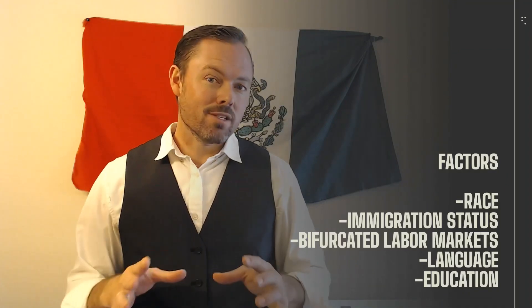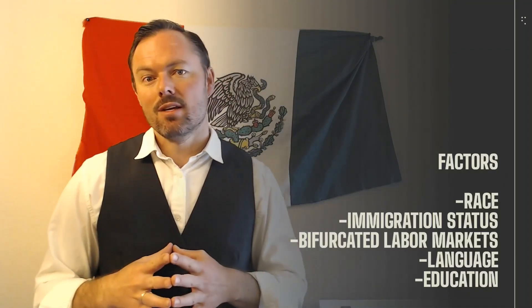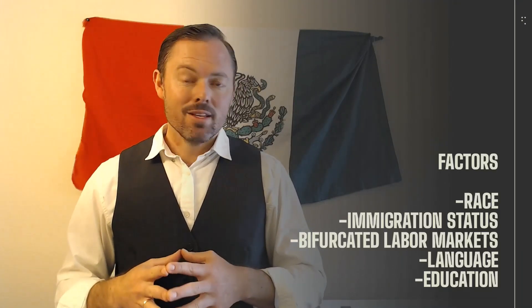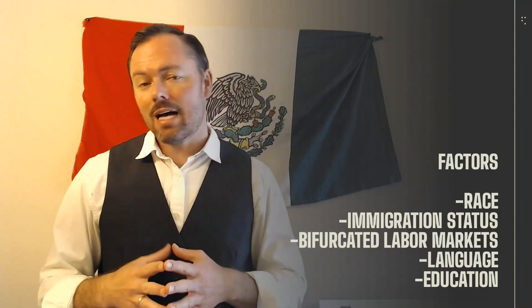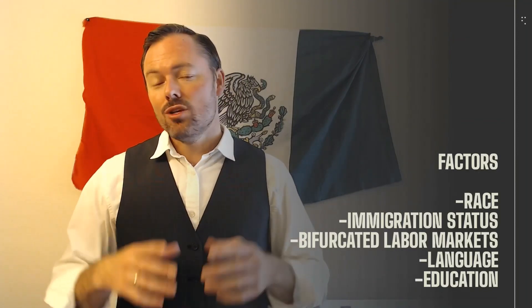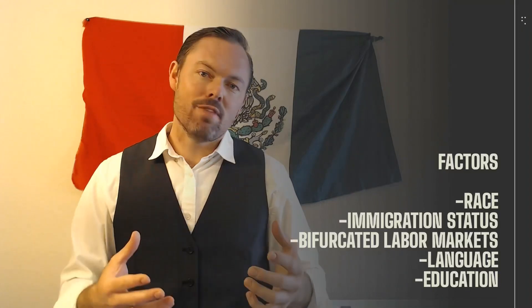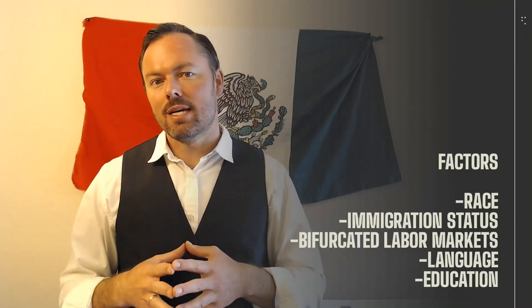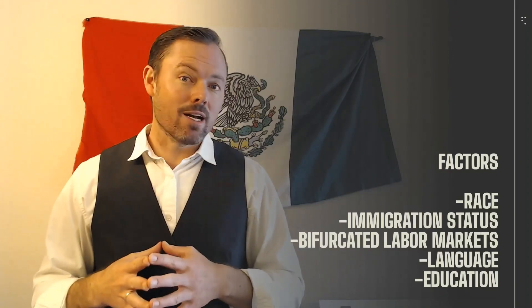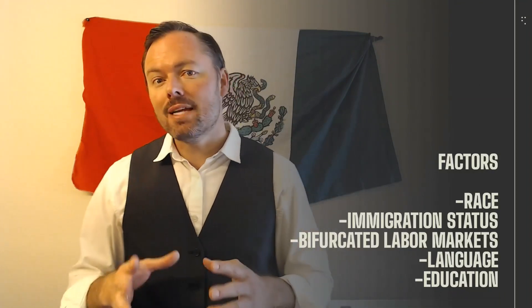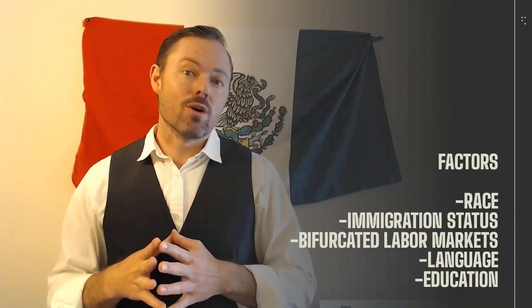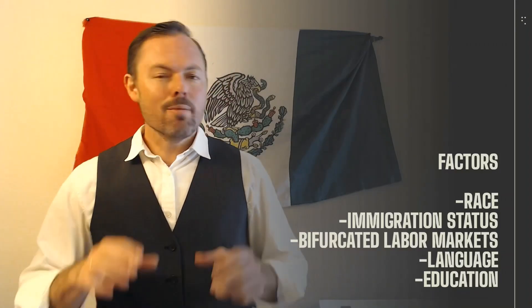Another important factor is immigration status. You don't get to choose your immigration status. There are some people — those with family members already in the United States or access to money — who are able to come in with documentation. In fact, if you have a million dollars and you're willing to invest it in the United States, you can have a path to citizenship. But if you don't have that money, it depends on the luck of the draw. The majority of people that come to the United States come on tourist visas and then overstay those visas, ending up living here without documentation. So immigration status matters.